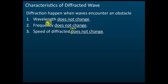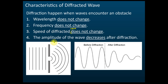But if wavelength, frequency, and speed remain unchanged, what will change? The amplitude of the wave will decrease. This is before diffraction, and after diffraction you can see the amplitude becomes lower and lower. Why?